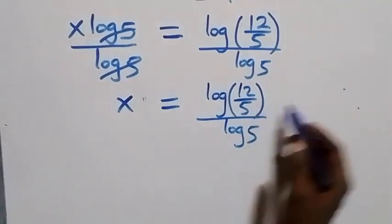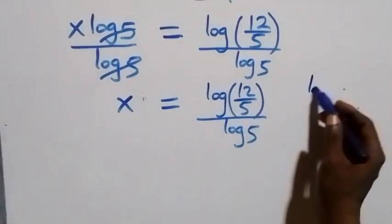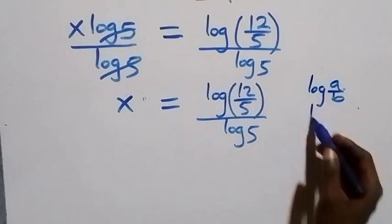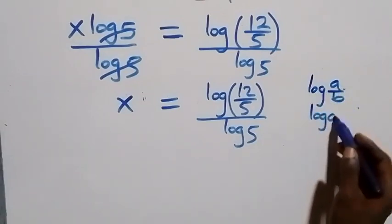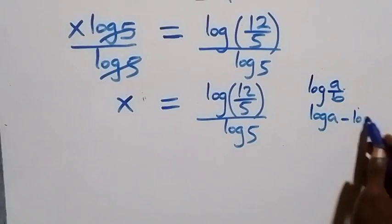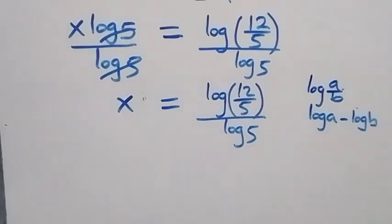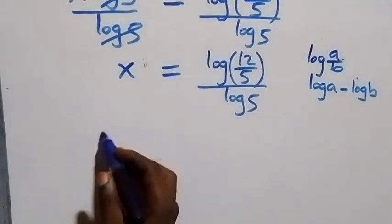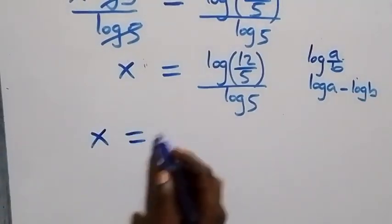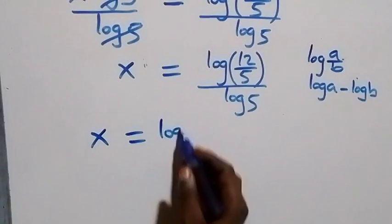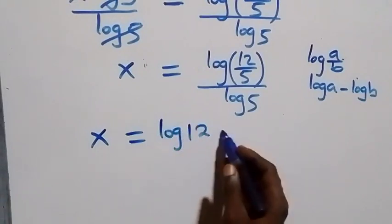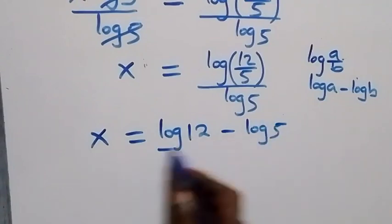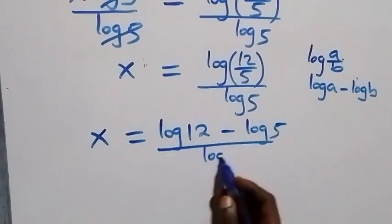What we have here follows the log quotient rule: log(a/b) is the same as log a minus log b. So from here this becomes x equals log 12 minus log 5, all over log 5.